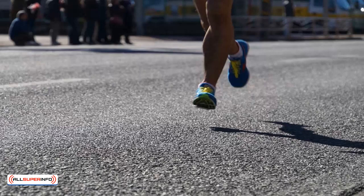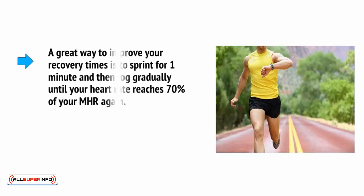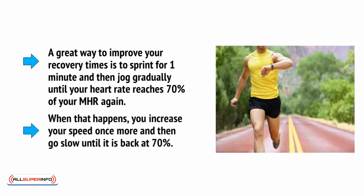And it doesn't just have to be time that is the deciding factor here either. You can just as easily train so you switch speeds depending on the distance, or so that you watch your heart rate. For example, a great way to improve your recovery times is to sprint for one minute and then jog gradually until your heart rate reaches 70% of your MHR again. When that happens, you increase your speed once more and then go slow until it's back at 70%.